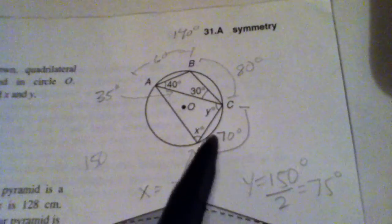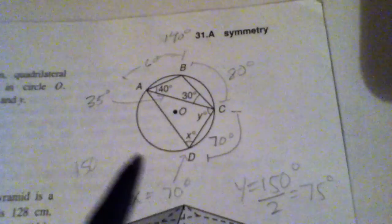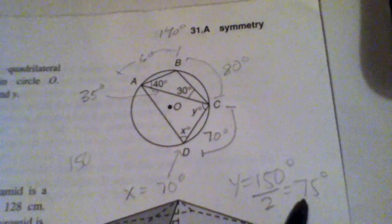And that gave me 150. And I know that an inscribed angle is half of the measure of the arc that it intercepts. So I went 150 divided by 2, I got 75.